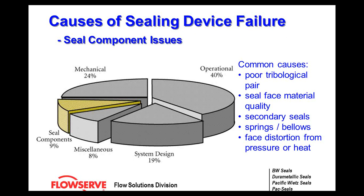The seal face material quality — making sure you have the proper seal materials for the application you're running. Secondary seals, which are the gaskets and o-rings, must be properly selected for heat and chemical attack. Springs and bellows: springs can get clogged; bellows, if they're the wrong metallurgy, can get corroded. Face distortions from pressure or heat are also an issue — a mechanical seal under great pressure will actually bow and the profile will get distorted, causing a leak.